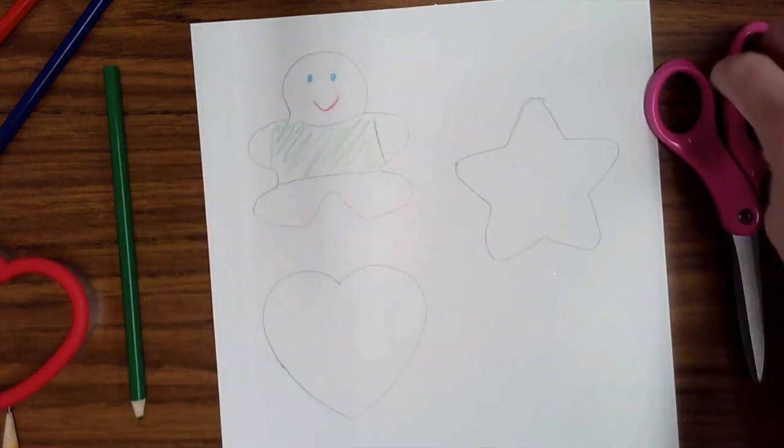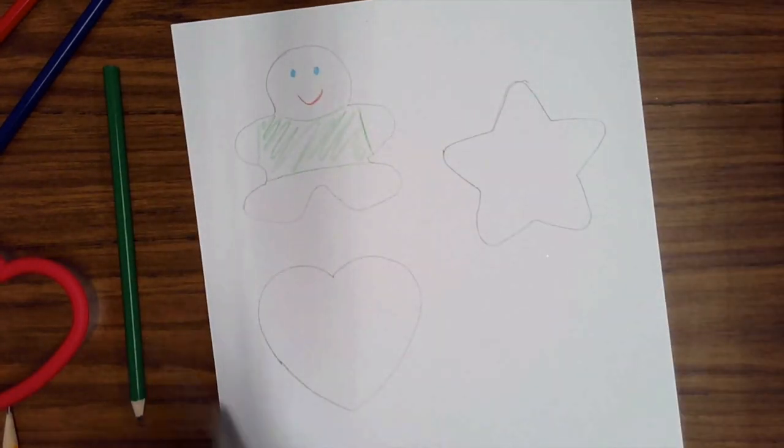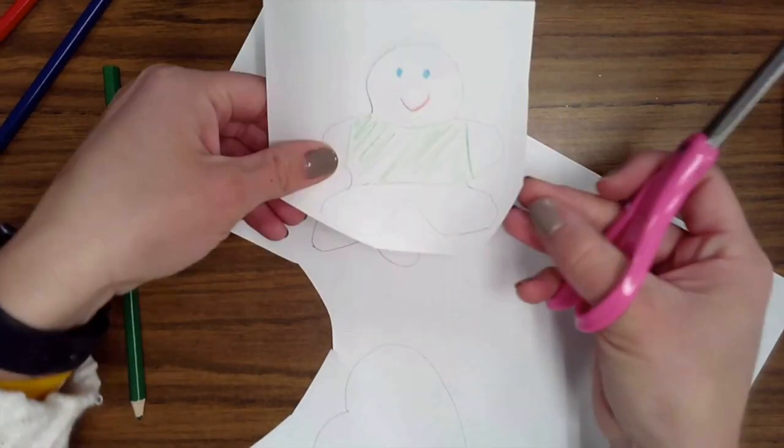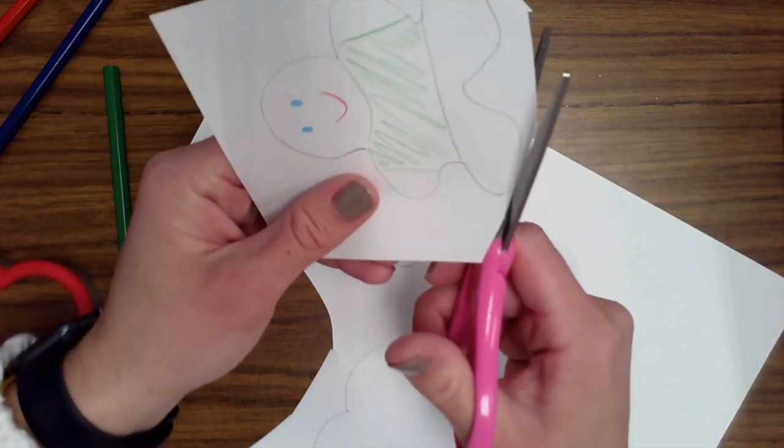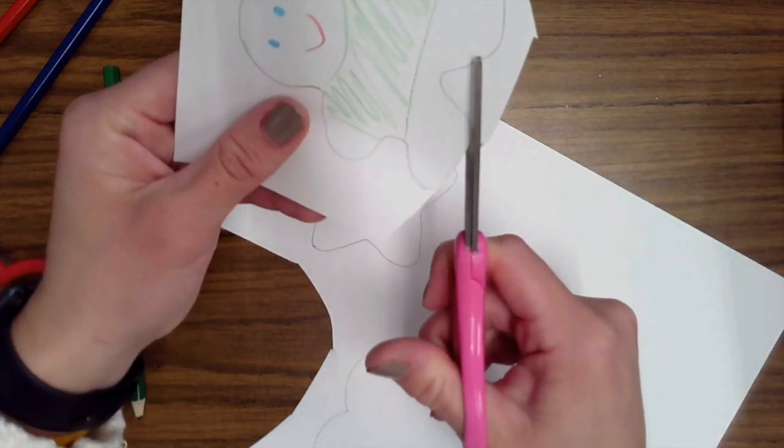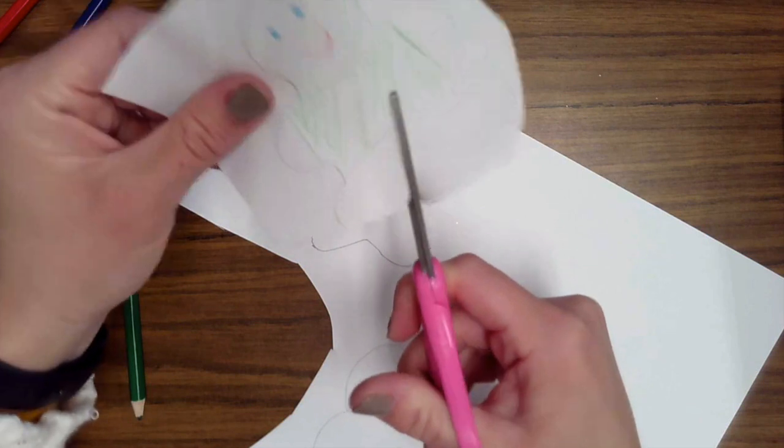And then if your directions are to cut it out, remember to first cut around just your little person you're going to cut out so you have less paper to deal with. And we're going to take our time, cut right along that line.